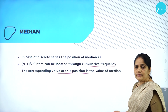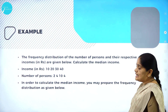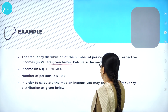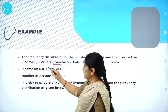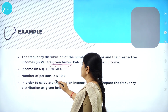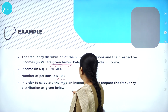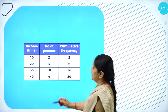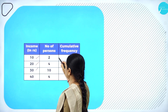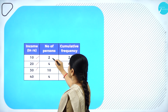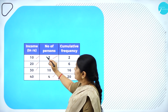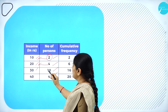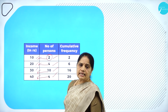We have a frequency distribution here. The frequency distribution of the number of persons and their respective incomes in rupees is given. Calculate the median income. Income values are 10, 20, 30, 40, and the number of persons are 2, 4, 10 and 4 respectively. So 2 represents persons whose income is 10; 4 represents persons whose income is 20; 10 represents income of 30; and 4 represents income of 40.